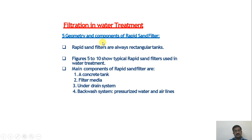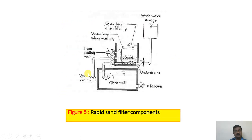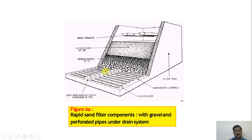Rapid sand filters are always rectangular concrete tanks. Key components include: the concrete tank, filter media, under drain system, backwash system, and pressurized water and air lines. The cross section of the filter shows how the layers are arranged, how backwashing is carried out, and how the clear water channel is connected.